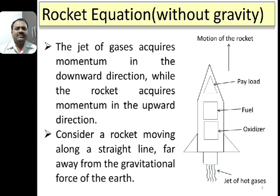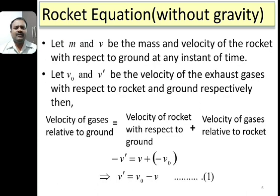Now let us derive the single stage rocket equation without gravity. The schematic diagram of a single stage rocket is as shown in the figure. Consider a single stage rocket moving along a straight line far away from the gravitational force of the earth. Let m and v be the mass and velocity of the rocket with respect to the ground at any instant of time. Let v0 and v' be the velocities of exhaust gases with respect to the rocket and with respect to the ground, respectively.